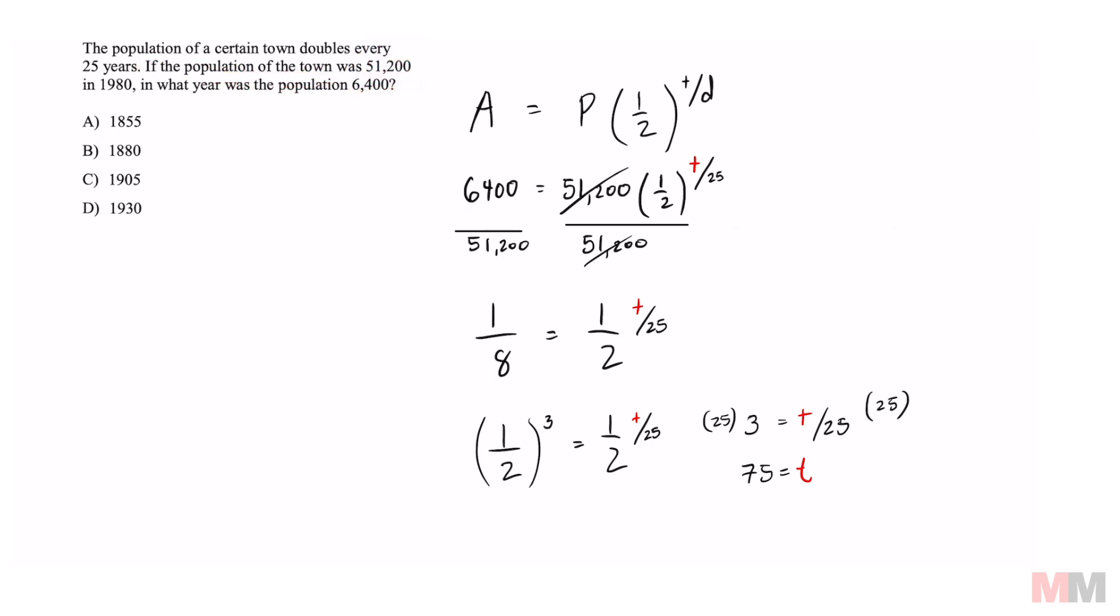From here, all we have to do is take the date that we started, 1980, and we're backtracking 75 years. So minus 75, that's going to equal 1905.